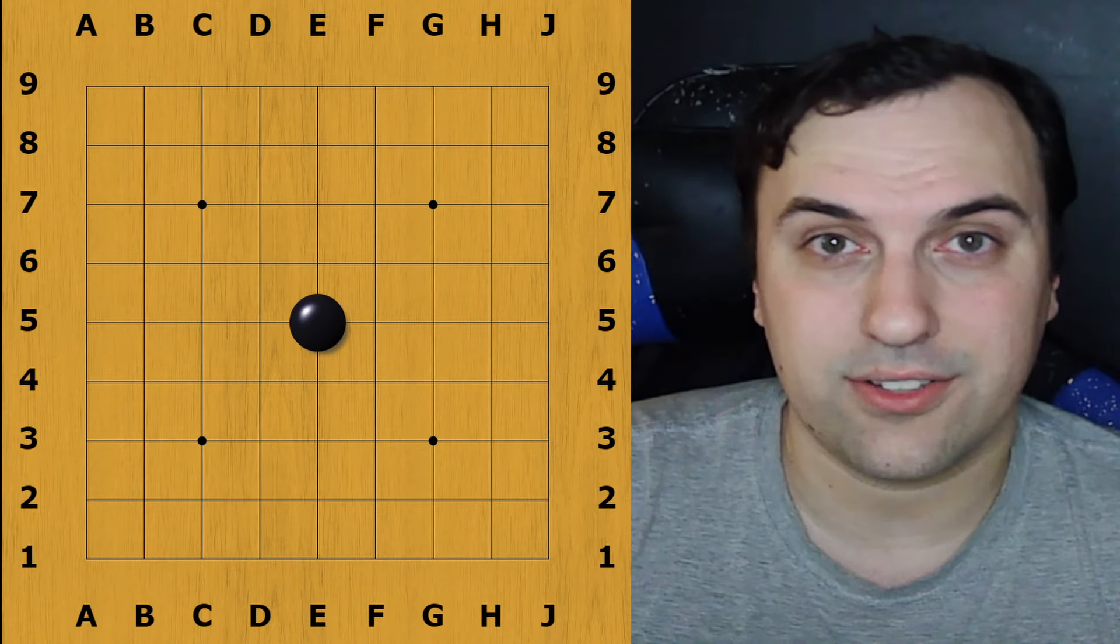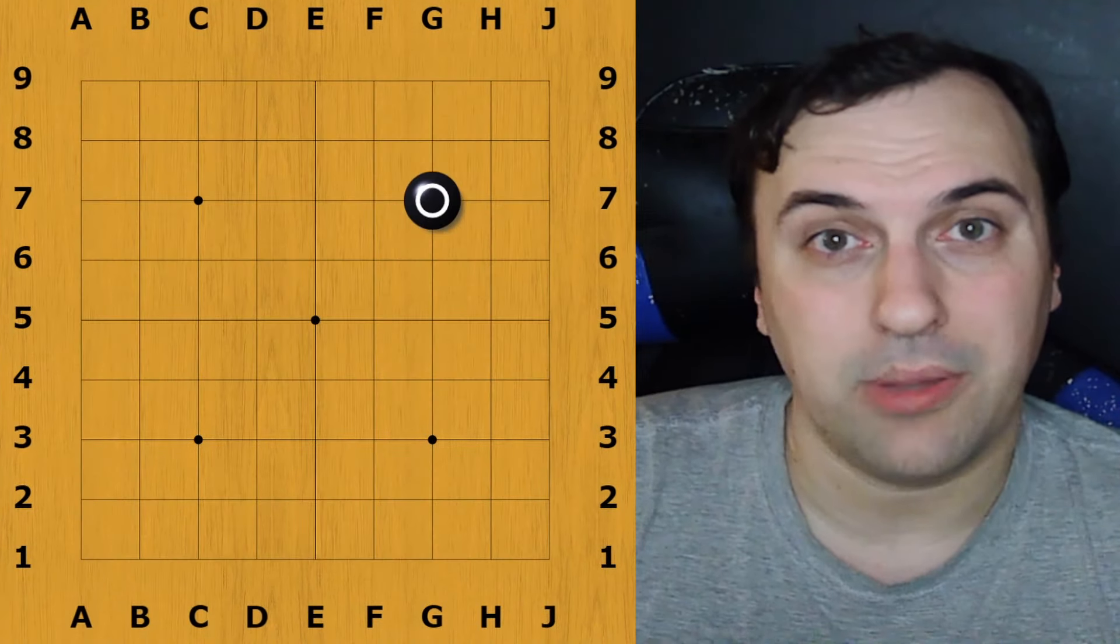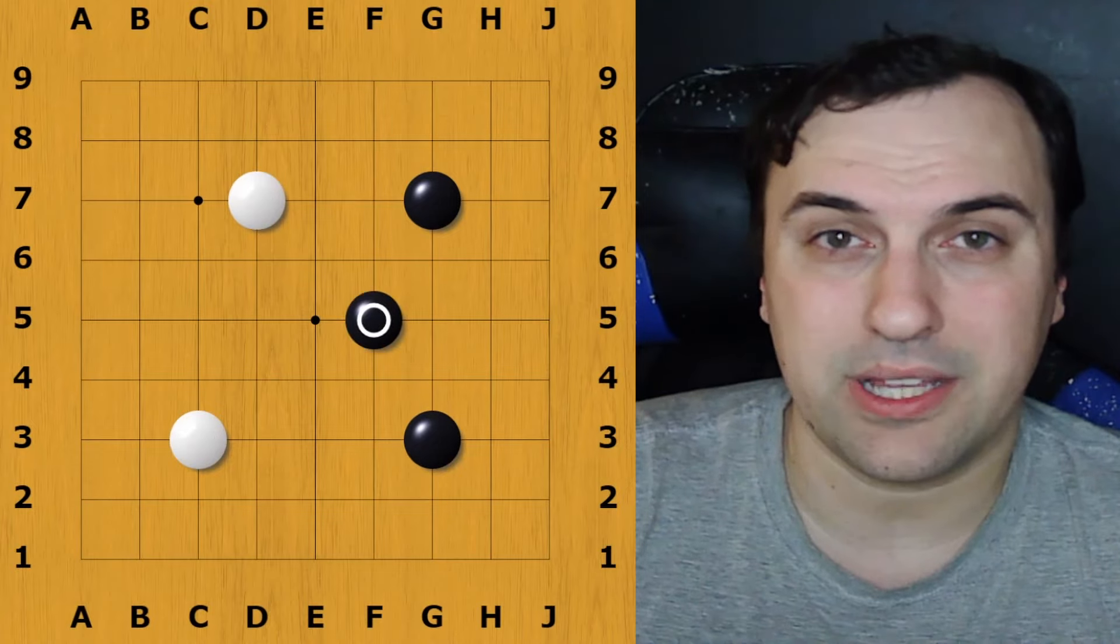Stones are played on the intersection of the board. This includes the sides and the corners. Black plays first, and then each player takes a turn, placing one piece at a time on the board. But how do you win at Go?